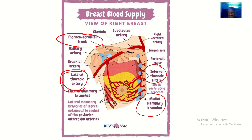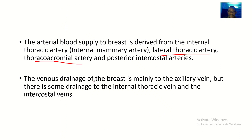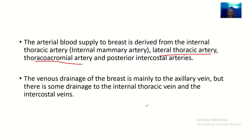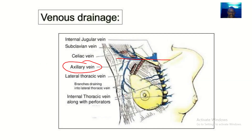The venous drainage is mainly to the axillary vein, but there is some drainage to the internal thoracic vein and the intercostal veins. Most of the blood from the breast drains to the axillary vein, with some drainage to the internal thoracic vein and the intercostal veins.